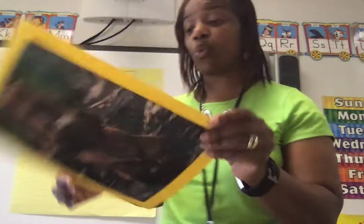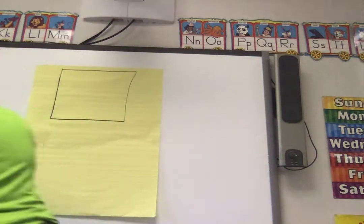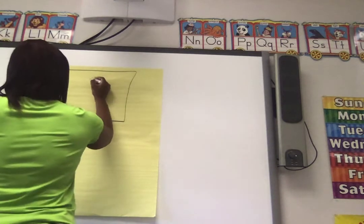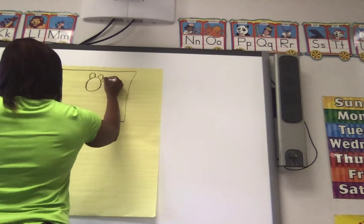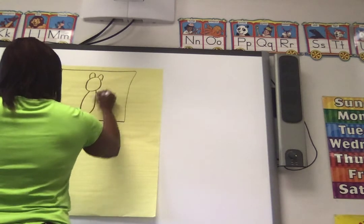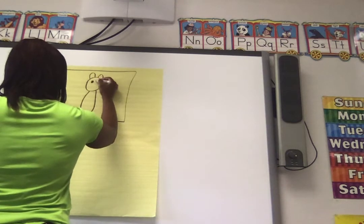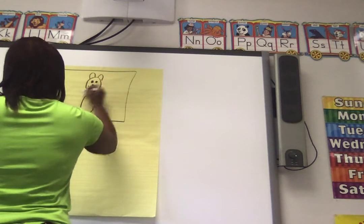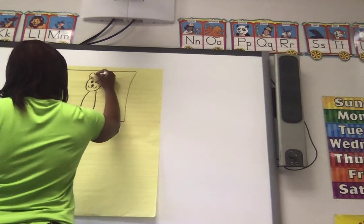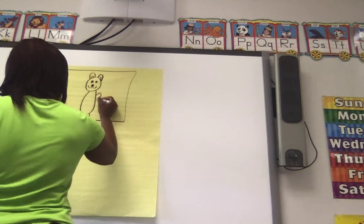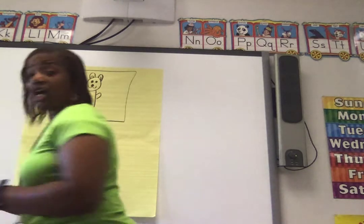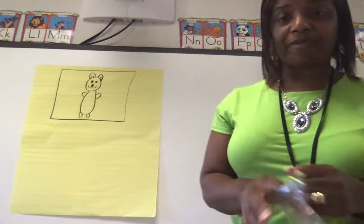So Mrs. Brown is going to draw what she sees. You saw this, so watch. This is your writing paper. Boys and girls, you're going to be authors and illustrators. I'm going to draw a bear. This is my bear. I'm going to color my bear. When we draw, we have to color. Do you see my picture of my bear? Good job.